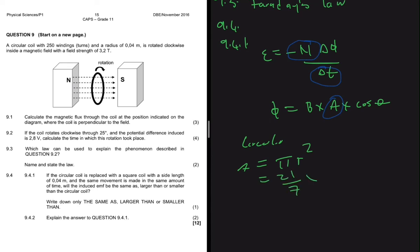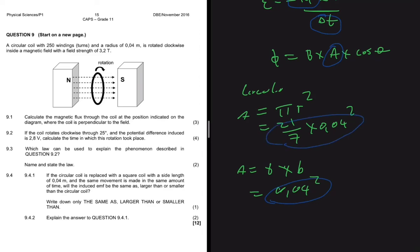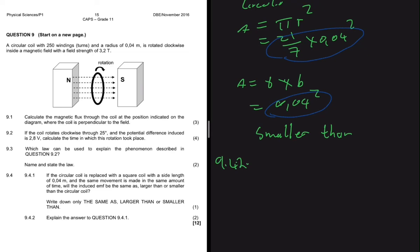The circular area is approximately (22/7) multiplied by 0.04 squared. The square area is side times side, which is 0.04 squared. Comparing the two: the circular area equals 0.04 squared multiplied by pi, which is larger than the square area by a factor of pi. Therefore the induced EMF of the square coil is smaller than that of the circular coil, because we are effectively decreasing the area.